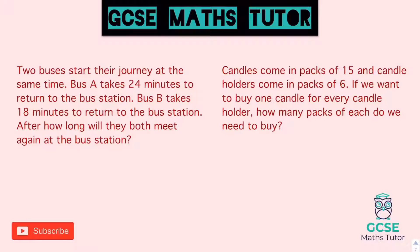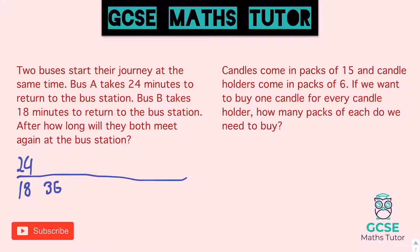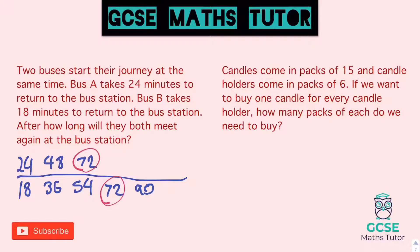Two buses start their journey at the same time. Bus A takes 24 minutes to return to the bus station, and Bus B takes 18 minutes. After how long will they both meet again at the bus station? So 18 and 24: multiples of 18 are 18, 36, 54, 72. Multiples of 24: 24, 48, 72. We've got a match at 72. So after 72 minutes — which is an hour and 12 minutes — they'll both be at the bus station.